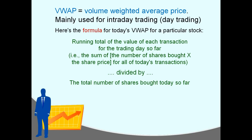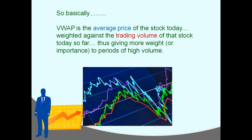That's the best way I can explain it, and you don't necessarily need to know that to be able to use it. Basically, VWAP is the average price of the stock today so far, weighted against the trading volume of that stock today so far — thus giving more weight, or importance, to periods of high volume. As opposed to a simple moving average, which doesn't really take volume into account — that's more just an average of all the prices. VWAP is kind of like a moving average in that it factors in the price, but it weights it in terms of trading volume, so it can give more importance to periods of heavy volume.